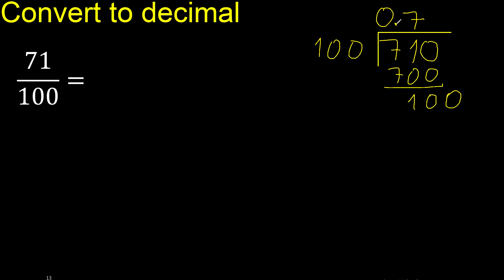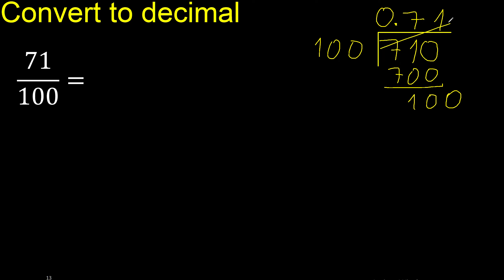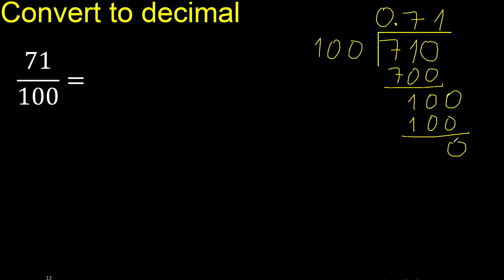Point. Only once 100 — 100 multiplied by which number? Multiplied by 1 is exact 100. Is not greater, subtract — is 0. Therefore finish.